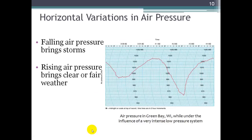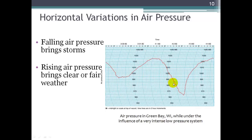Typically, falling air pressures indicate that storms are on the way, and rising air pressures indicate fair weather. Here we see a barograph reading for a location in Wisconsin showing pressure over a few days. We can see it decreases, then increases, then dips down very low — and in fact a storm passed through during that time period.